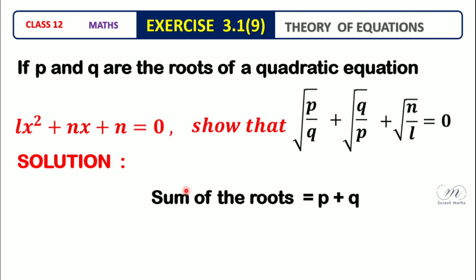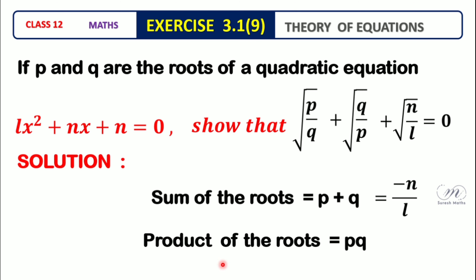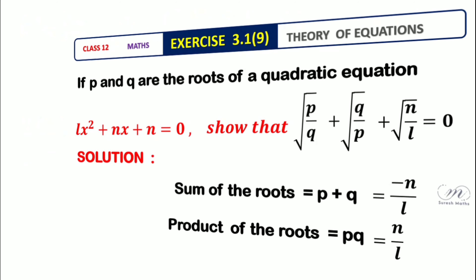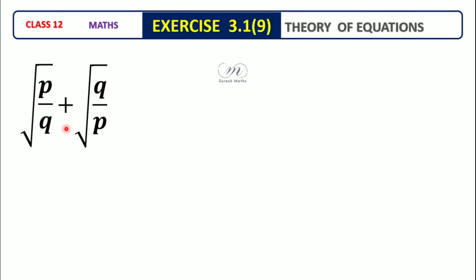Sum of the roots: P plus Q equals minus n by L. Product of the roots: P into Q equals n by L. We can write root of P by Q plus root of Q by P in terms of P plus Q over root of P by L.